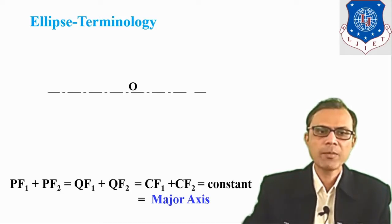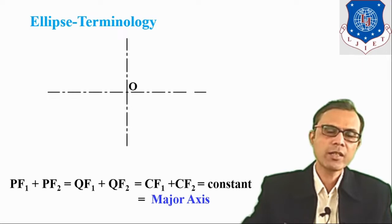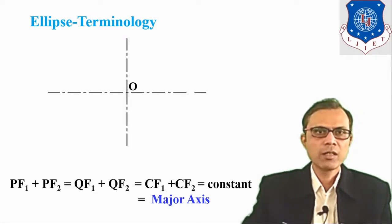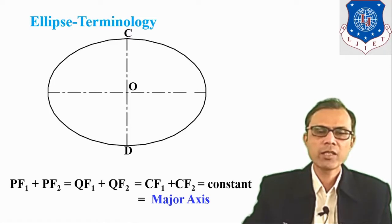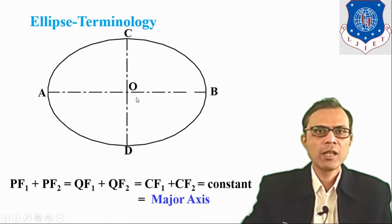We know that every ellipse has two axes — major axis and minor axis. Here, one O-point is considered as the center point and two axes are taken: AB and CD as the major and minor axes of the given ellipse. AB is the major axis and CD is the minor axis, and O-point is the point where both axes are intersecting with each other.